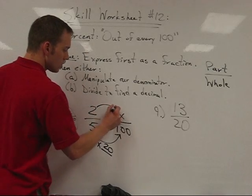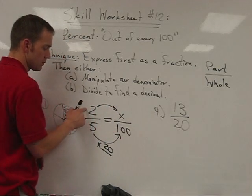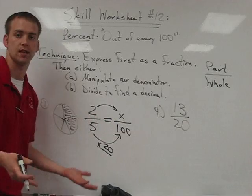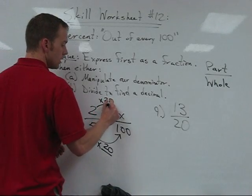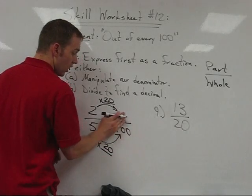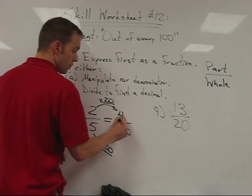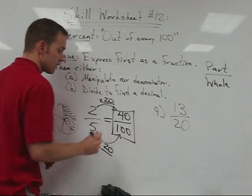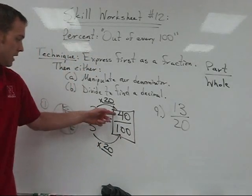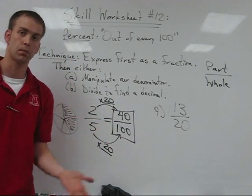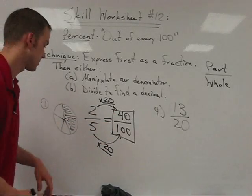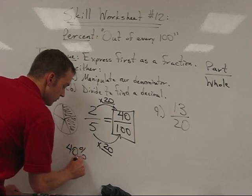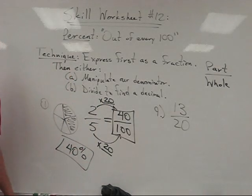Neat thing is this. You also know that this number must be 20 times larger than this numerator. So taking 2 times 20, we determine that X would have to be 40. The neat thing about this is we know that 2 fifths is the same as 40 out of 100. We know since this is out of 100, this is 40%.